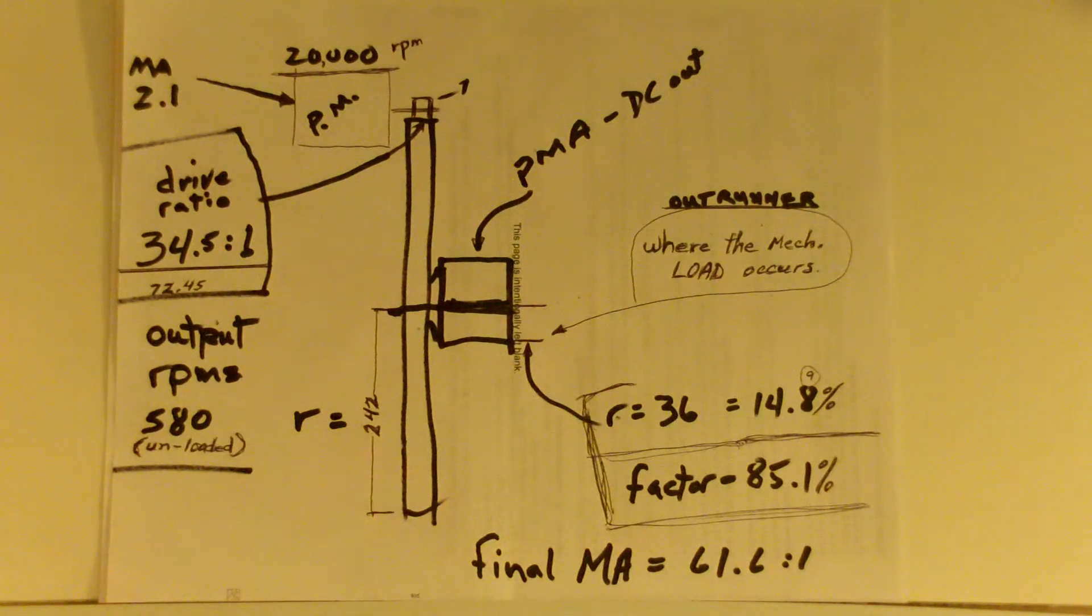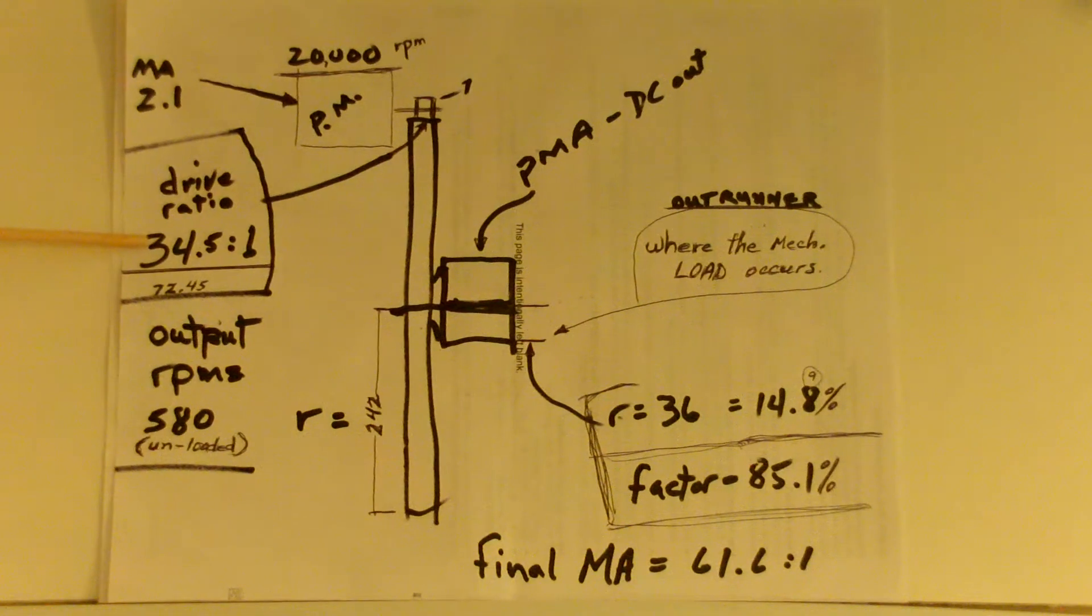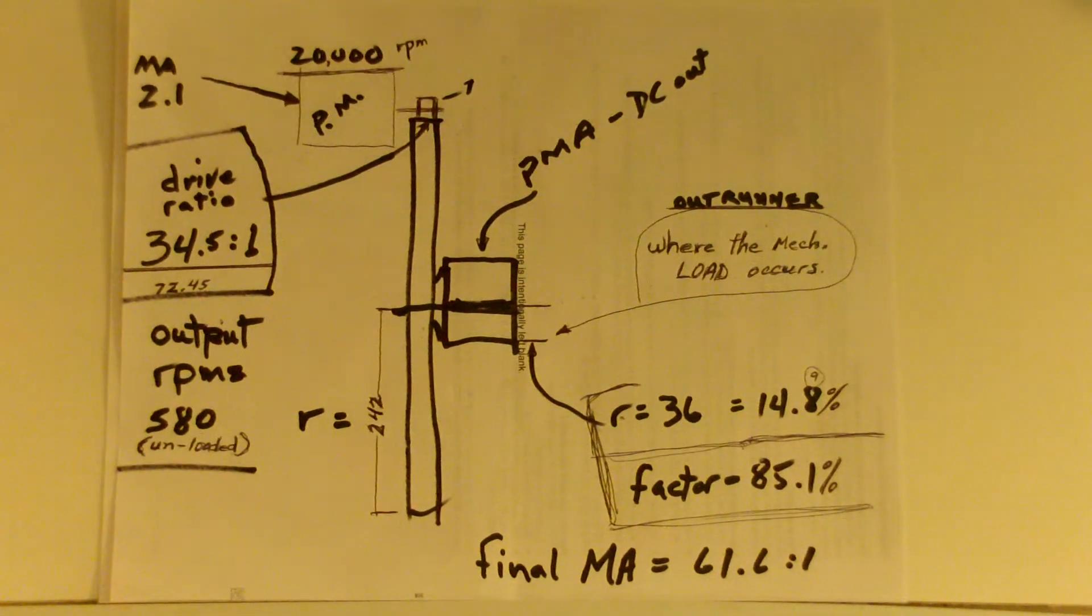This is a classic example. Ideally, a high speed prime mover is a good thing. That actually allows the system to be made smaller. Because my system has ended up with a 34.5 to 1 reduction at this mesh here. But it's a friction drive, so there's plenty of losses. But if I can even break even, it would be a wonderful thing.